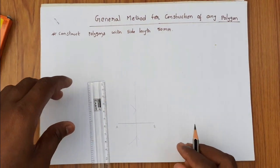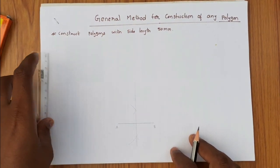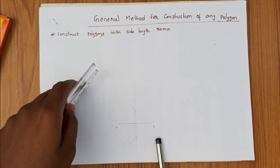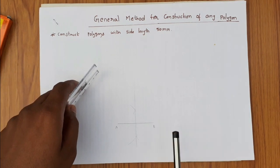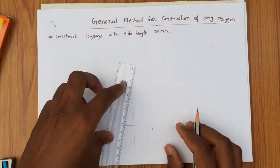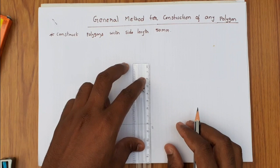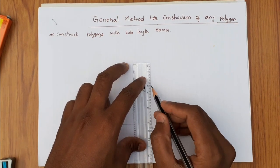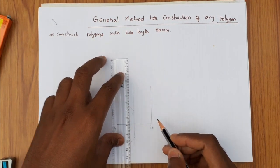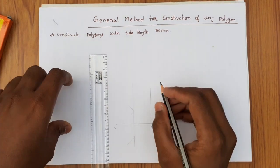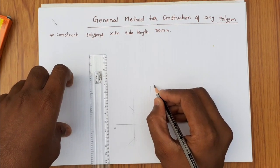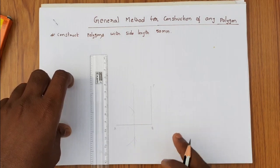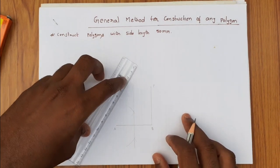From point B, draw a line perpendicular to AB and passing through point B. Name that point P. Here AB equals 50 mm and BP also equals 50 mm. Now join A to P.